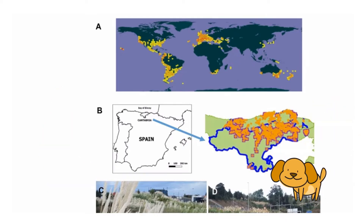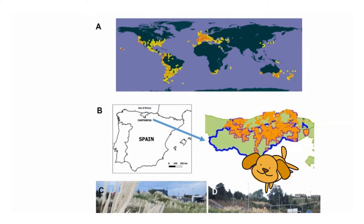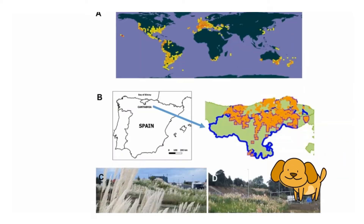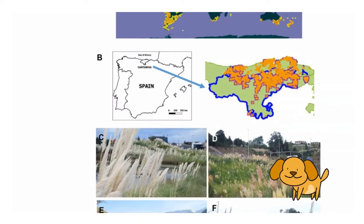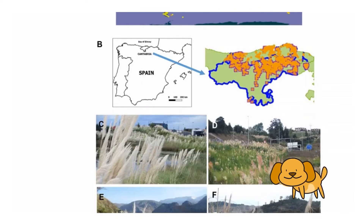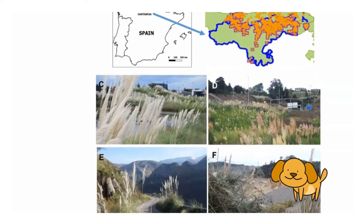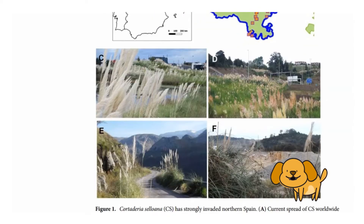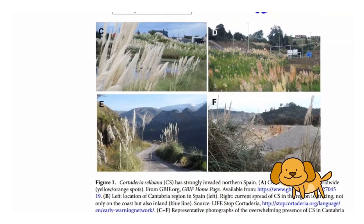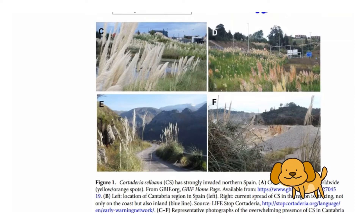In many of these locations, Cortaderia selloana has strikingly spread and has now been classified an invasive species. Many pernicious consequences of Cortaderia selloana have been reported for local biodiversity, landscape and structures. However, the effect on human health has not been studied.